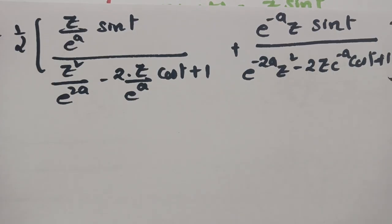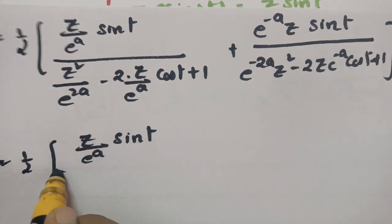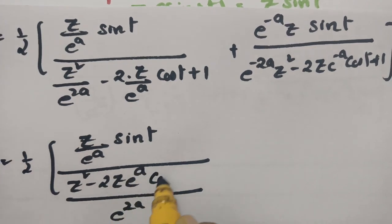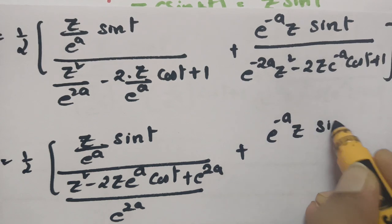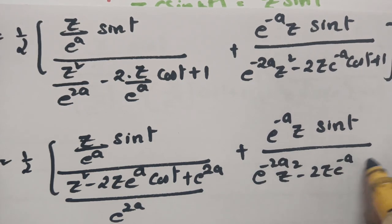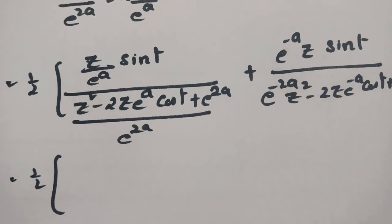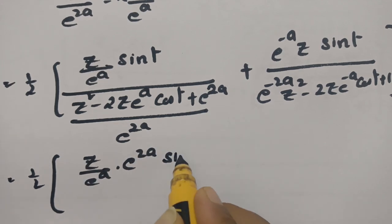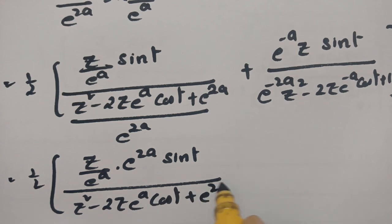Now if I take LCM here it will be z square minus 2z into e power a into cos(t) plus e power 2a. And the next one is e power minus a into z times sin(t), divided by e power minus 2a into z square minus 2z e power minus a into cos(t) plus 1. So if I send this to the numerator, then this will be z by e power a into e power 2a, giving sin(t) divided by z square minus 2z into e power a into cos(t) plus e power 2a.